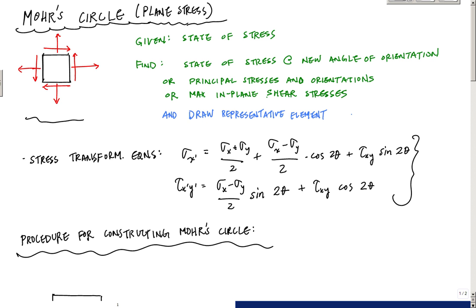Usually what you're given is the state of stress here that you calculated from using all your stress equations, like MY over I, or VQ over IT, all the shear stress equations, whatever. You got the state of stress at a point in a structure, and now you want to find either the state of stress at a new angle of orientation, the principal stresses and orientations, or maybe the maximum in-plane shear stresses, and inevitably it requires that you draw a representative element in that new orientation.